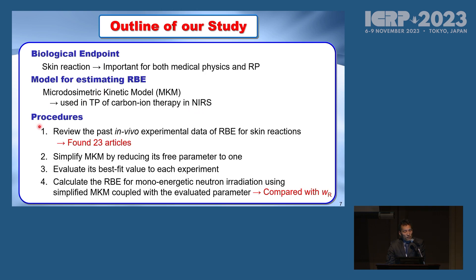The procedure: first we reviewed past in vivo experimental data of RBE for skin reactions and found 23 articles. Then we simplified MKM by reducing its free parameters to one and evaluated its best-fit value to each experiment. Finally, we calculated RBE for mono-energetic neutron irradiation using the simplified MKM coupled with the evaluated parameter, and compared data with WR values.